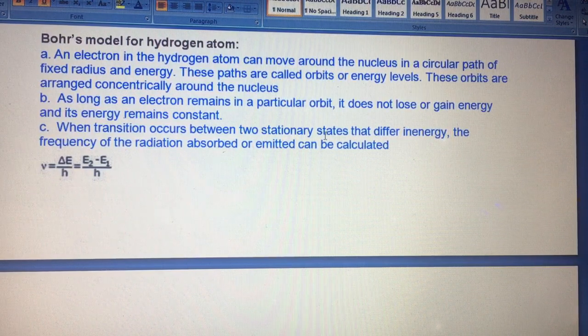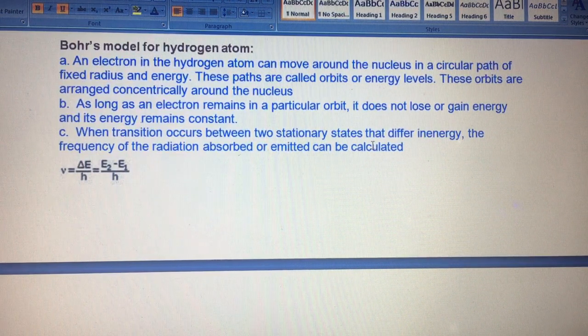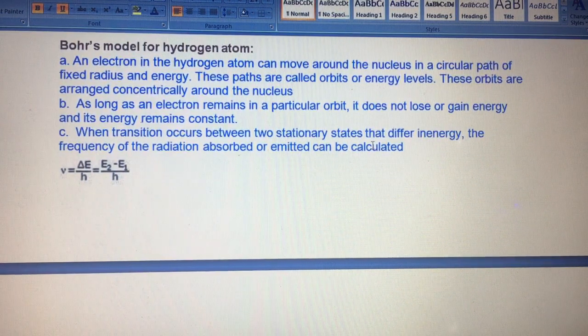Bohr model says that an electron moves around the nucleus in a circular path with fixed radius and fixed energy. These paths are called orbits or energy levels. The orbits are concentrically arranged, meaning they have a common center around the nucleus. As long as an electron remains in a particular orbit, it does not lose or gain energy.